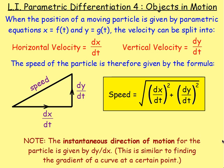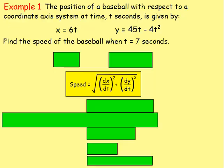Example 1: The position of a baseball with respect to a coordinate axis at time t seconds is given by x = 6t and y = 45t − 4t². Find the speed of the baseball when t = 7 seconds.